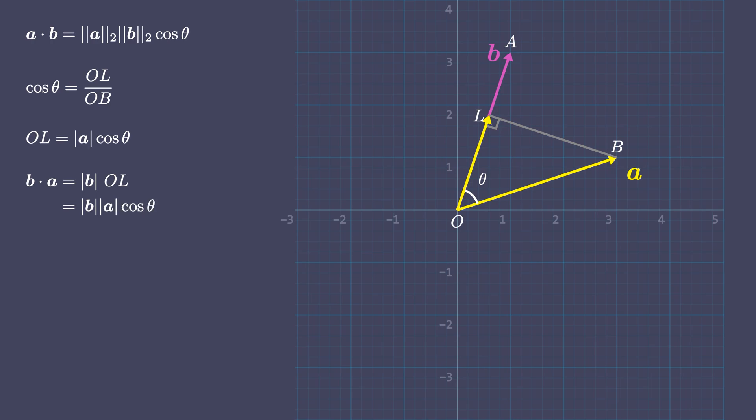We get magnitude of B times magnitude of A times the cosine of the angle between A and B, which is essentially same as what we got for A dot B.